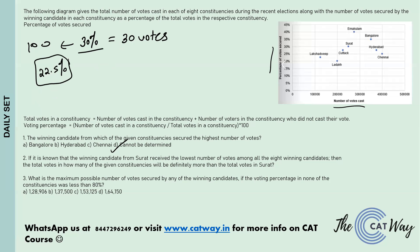The same logic applies to Ladakh, since it also has a lower percentage of votes secured but in absolute terms more than 30 votes, so the total number of people will definitely be more. The same goes for Katak, Hyderabad, and Chennai — all have lower percentage of votes compared to Surat but more absolute votes, so the denominator — total number of voters — will definitely be greater than Surat's.